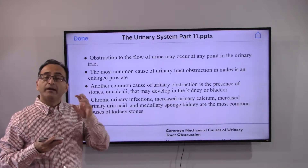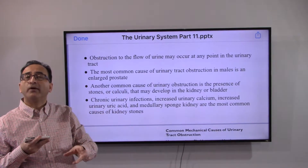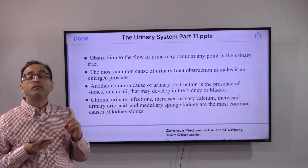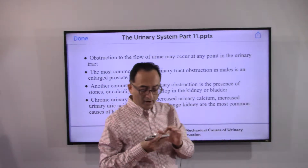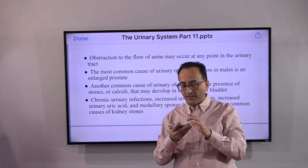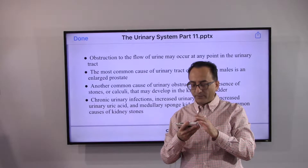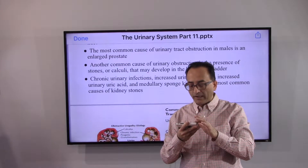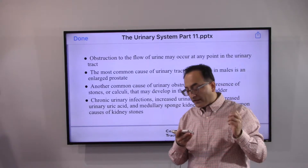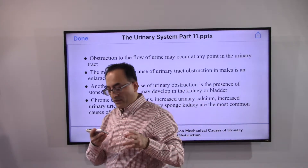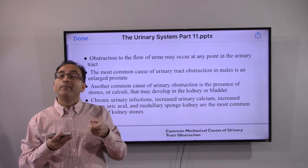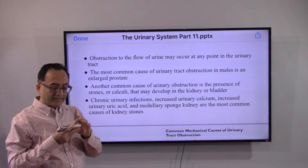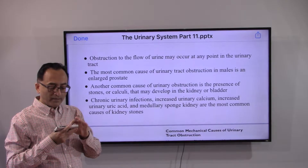The entire urinary system — the kidney, ureter, bladder, and urethra — can be affected by obstructive diseases. Stones may develop in the bladder as well. Common causes of kidney stones include chronic urinary infections, increased urinary calcium, increased urinary uric acid, and medullary sponge kidney, which we reviewed in a prior video.